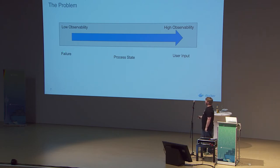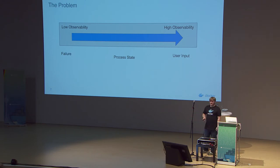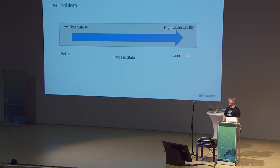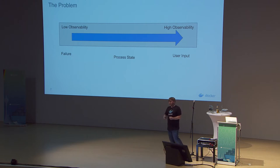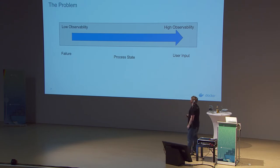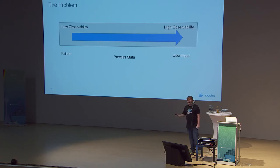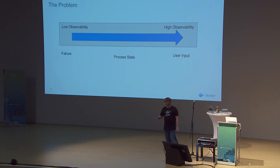For instance, observing whether a node has failed has very low observability — you can't know for certain if you lose connection. Process state is more easily observable: if you have an active connection and something's telling you something's running, you know it was running at that point. User input we can put into high observability by integrating things like Raft in a data store, which Aaron will talk about later.